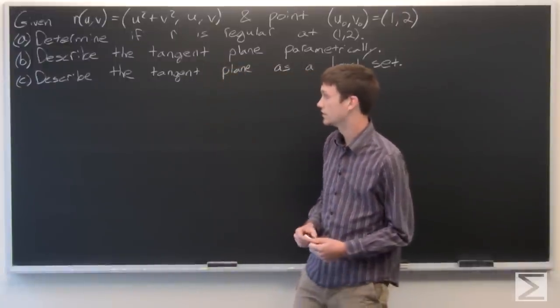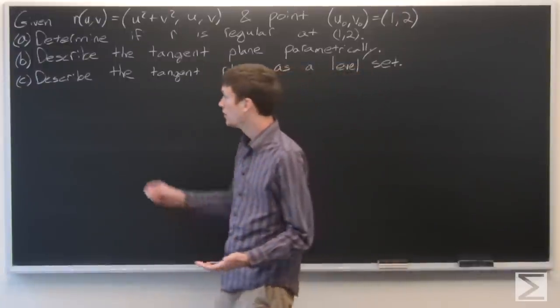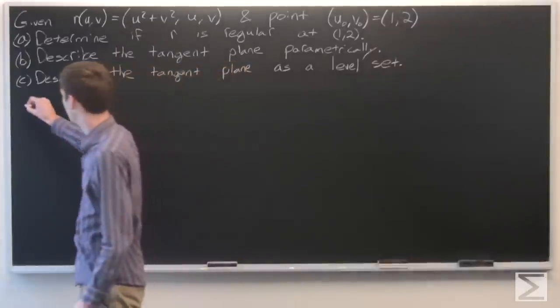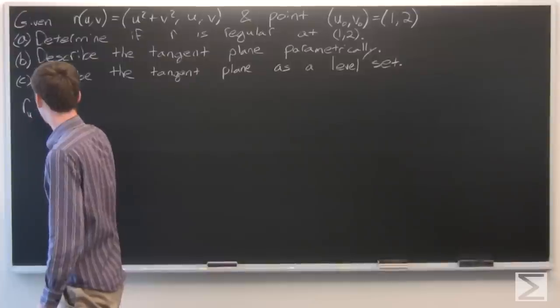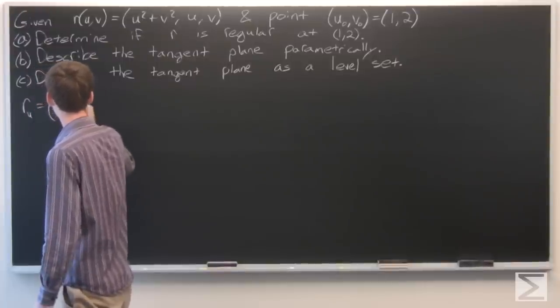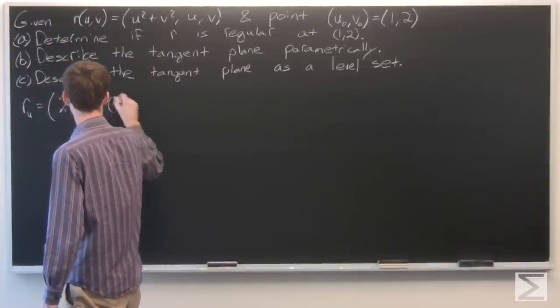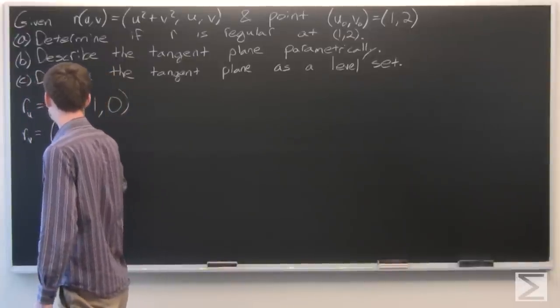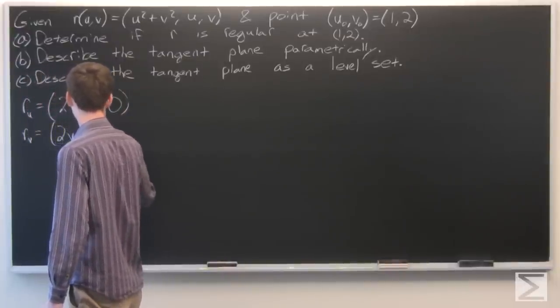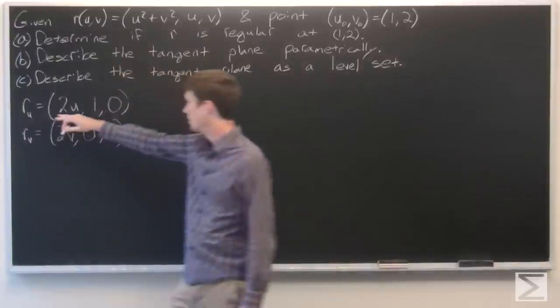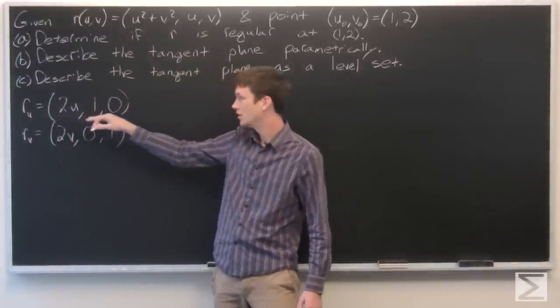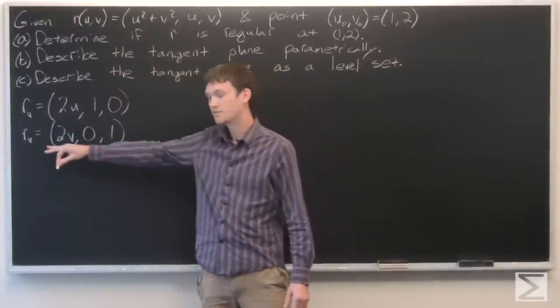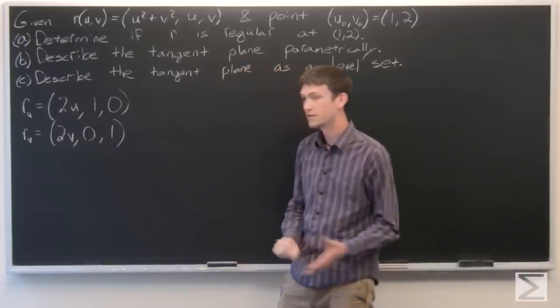Okay, so first to determine if r is regular, we'll take the partial derivatives of r. So we have r sub u is 2u, 1, 0. r sub v is 2v, 0, 1.